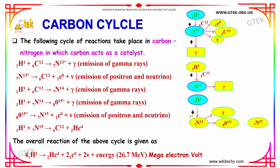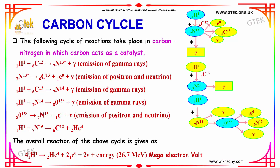My oxygen-15, which is unstable, won't stay for long and it will become nitrogen-15, with the emission of a positron and neutrino. So, my nitrogen-15 — you are able to see this one.